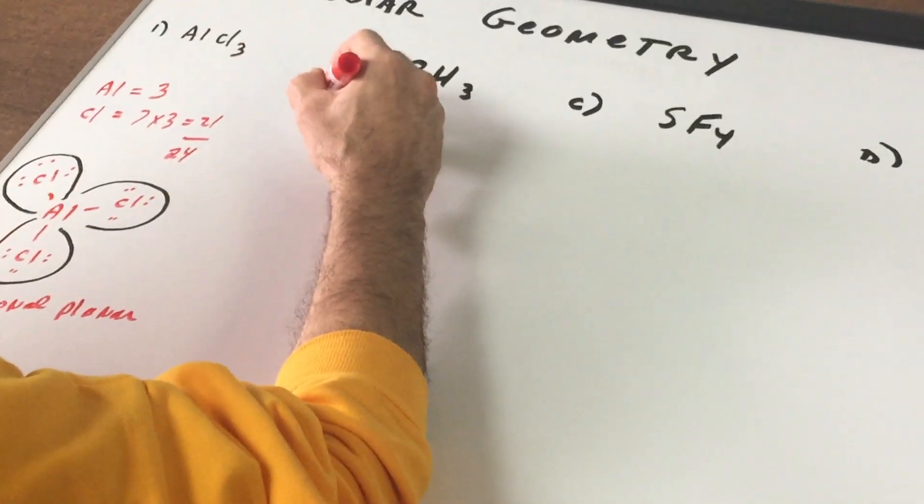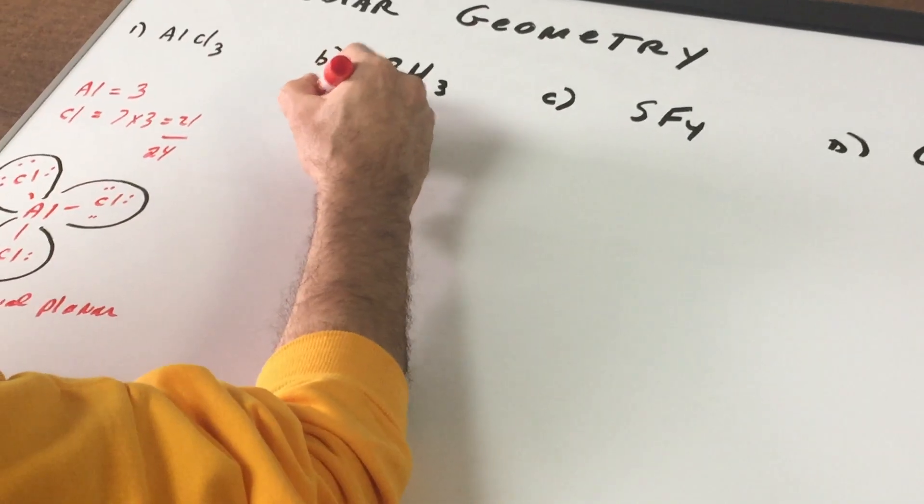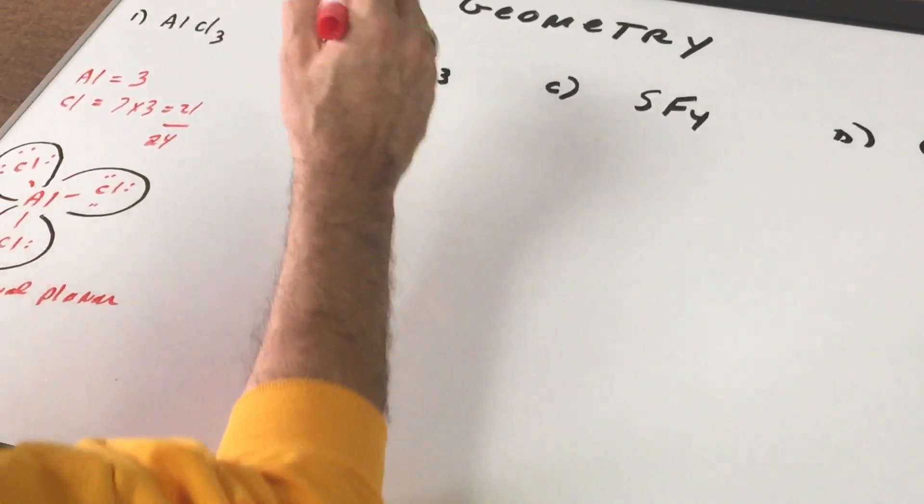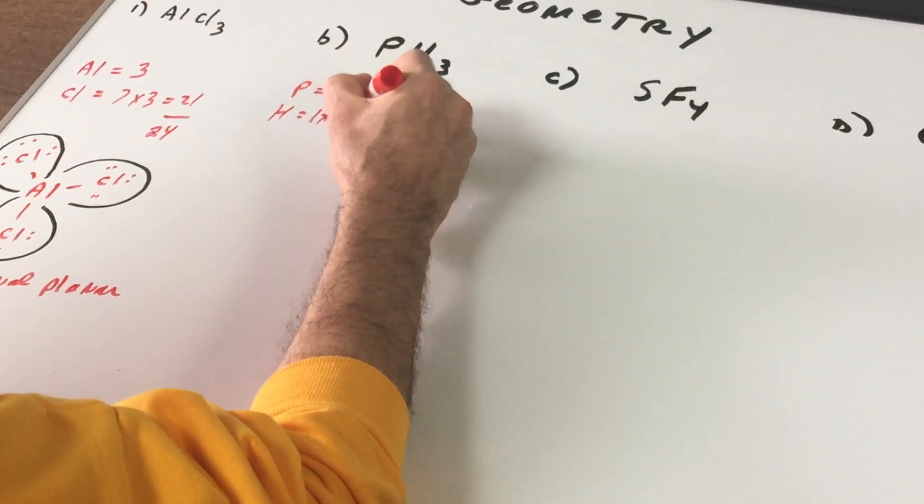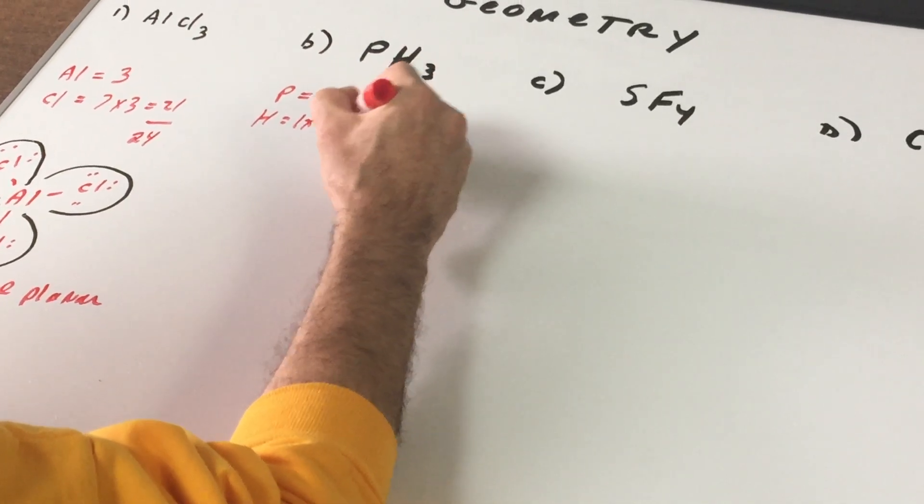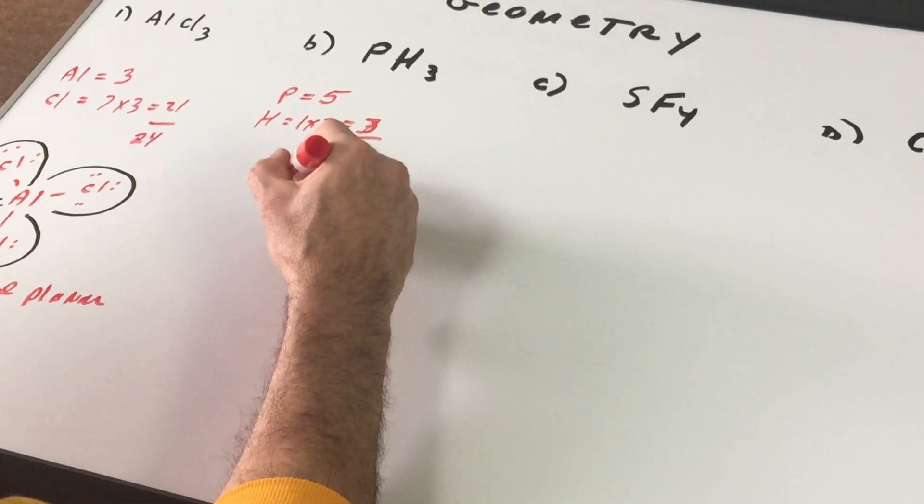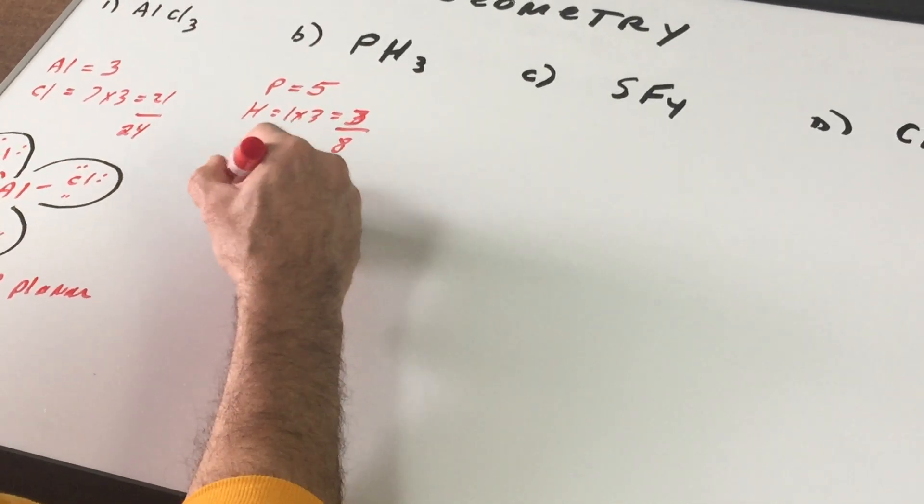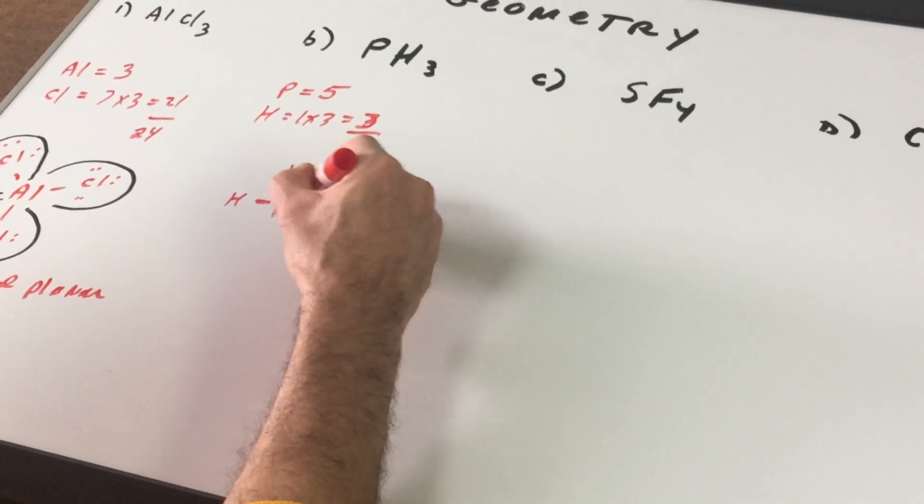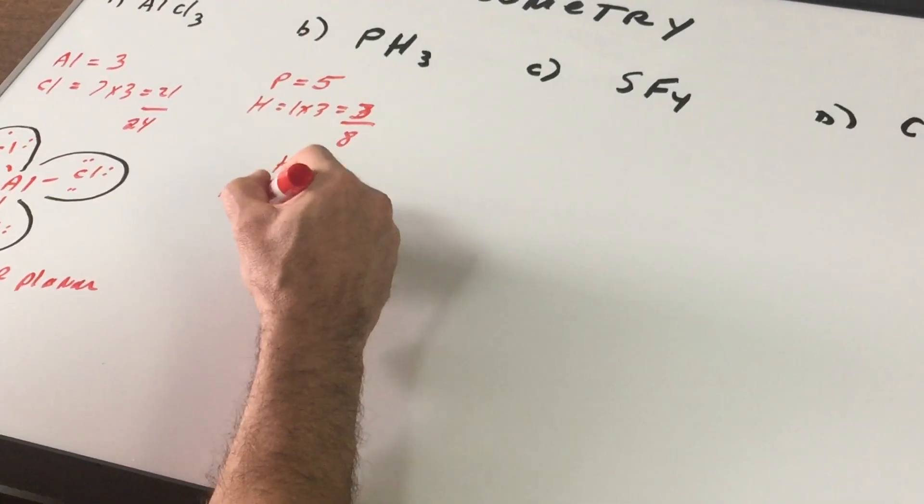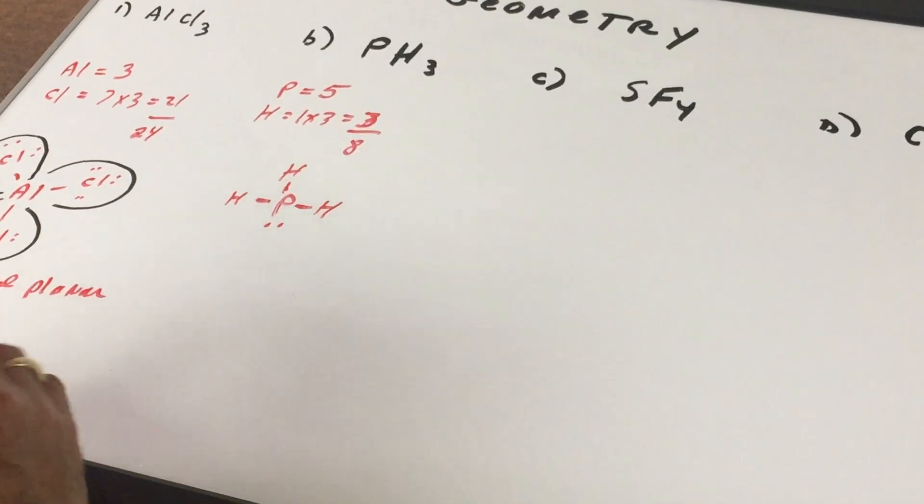In the next example again phosphorus is in group 15 but we count it as group 5. Hydrogen is in one and there's three of them. That gives me a total of eight valence electrons. You put the phosphorus in the middle. You put the three Ps. That gives me a total of two, four, six. If there's any leftover you got to put it on the central atom.